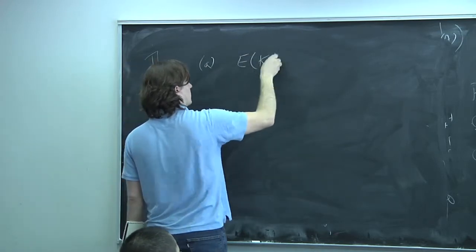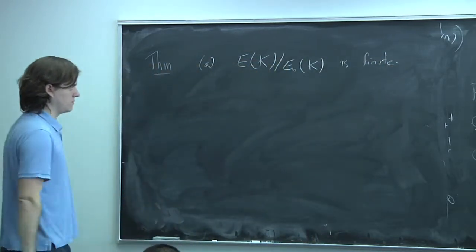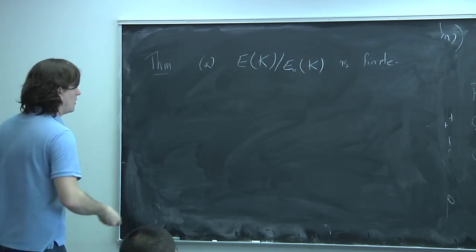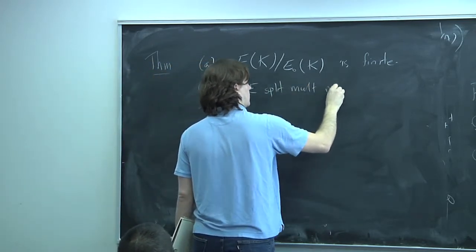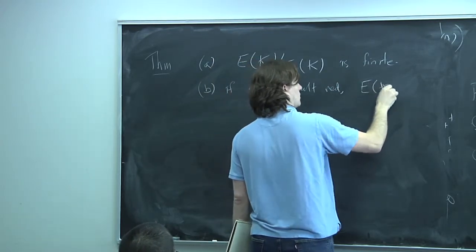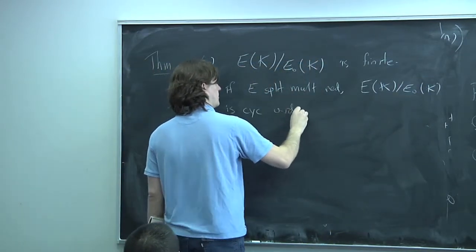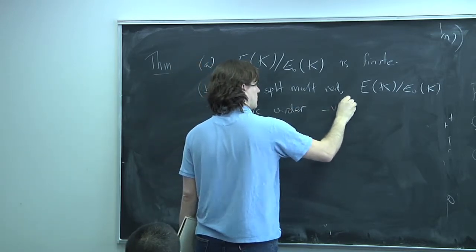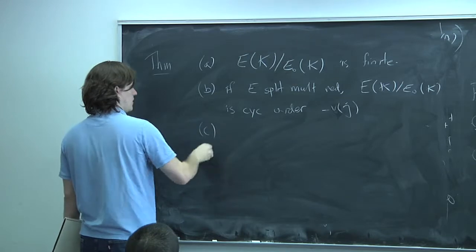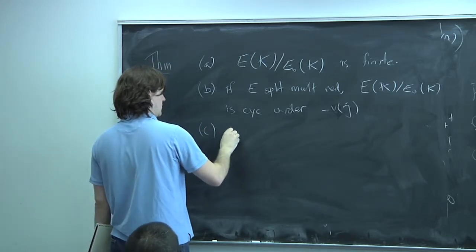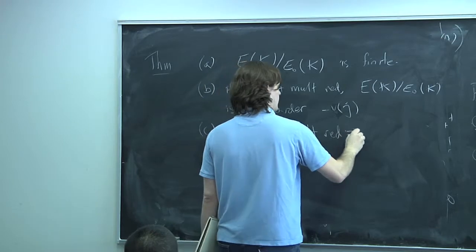First, the quotient E(K)/E₀(K) is finite. Second, if E has split multiplicative reduction, then this group is cyclic, and its order equals the valuation of the j-invariant. Third, otherwise — if it's not split multiplicative reduction — this quotient has size at most four.